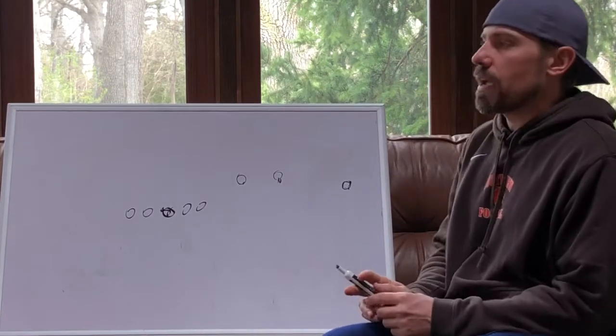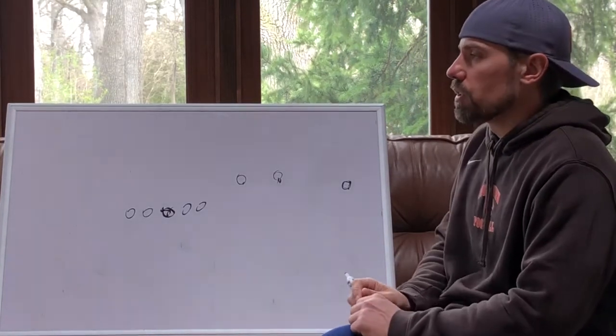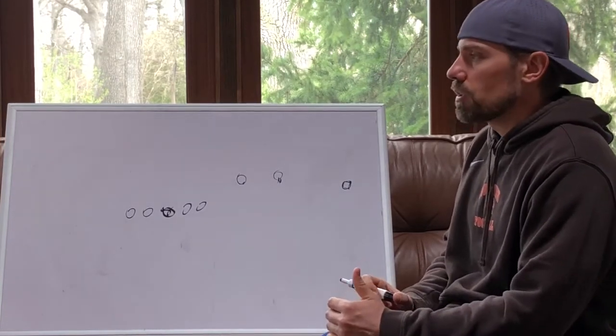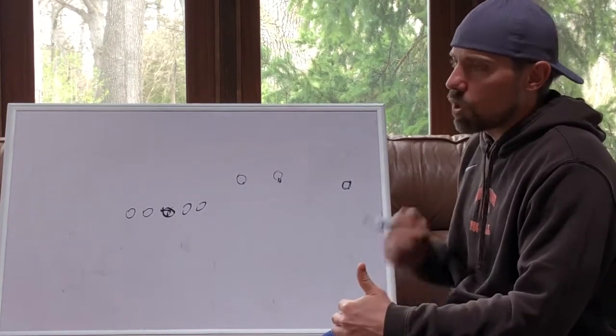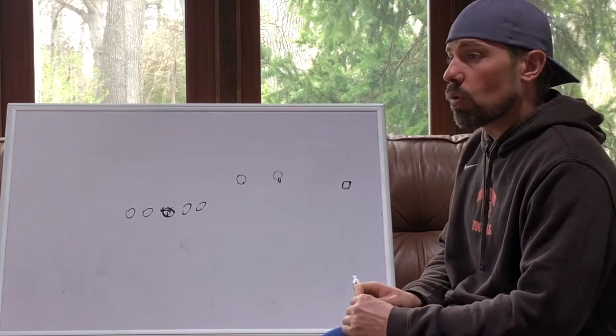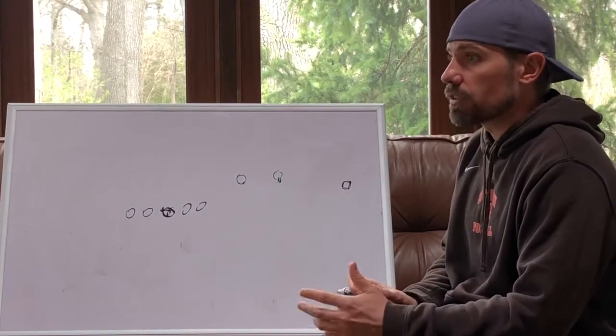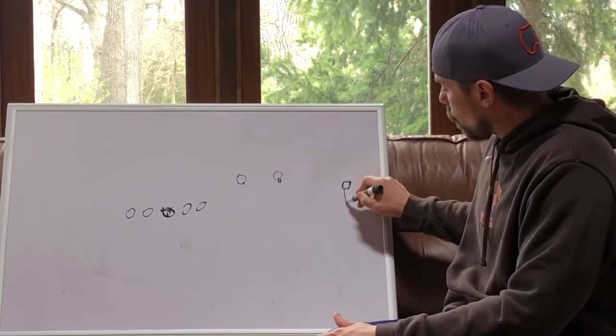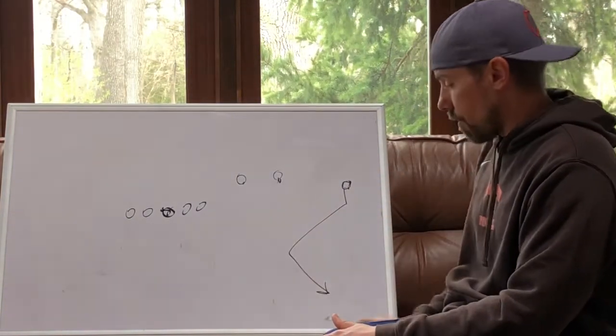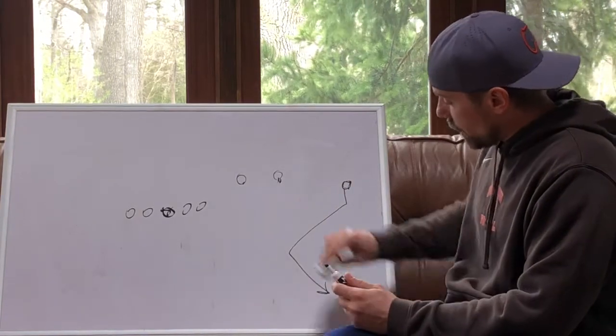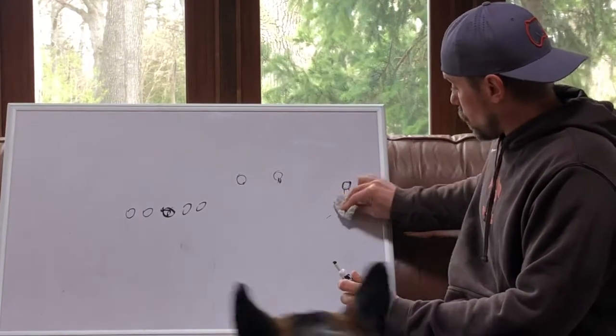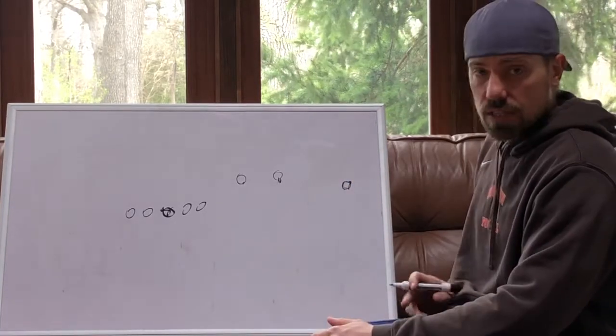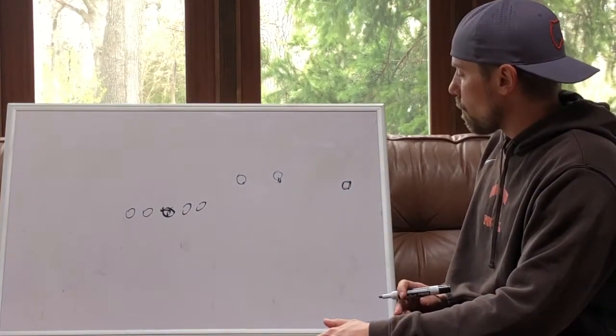So when you're dealing with man-to-man, what you want to run is quick-breaking timing routes, slants, outs, throwing them off the cut, or matchup-type routes like fades where you think you have a good matchup. Double-move routes would be another good thing. Like post-corners, tough route man-to-man to cover. Hitch and go. Hitch, because they're going to be soft with the hitch usually, because they're going to give you the hitch. So these are things you run man-to-man.